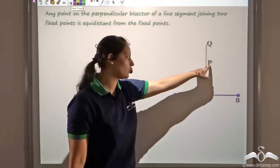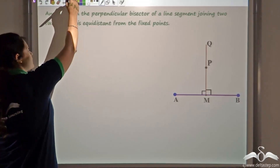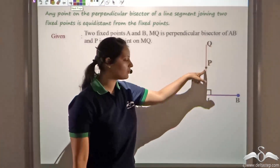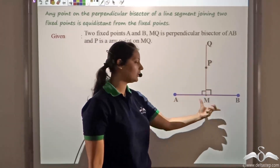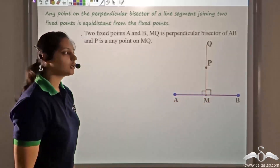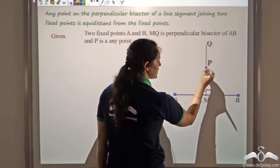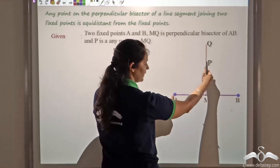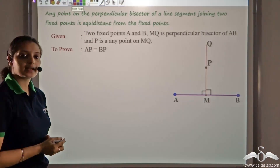I have taken this point P to be here, which is on the perpendicular bisector MQ. Now, what do I want to prove? First, let us see what is given to us. We are given two fixed points A and B. We are given that MQ is the perpendicular bisector of line AB — that is, it is perpendicular and M is the midpoint. Also, we have a point P which is any point on this line MQ. What I want to prove is that AP would be equal to BP.